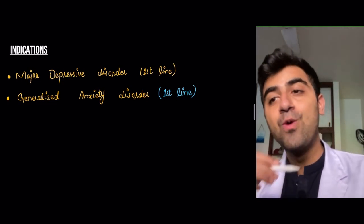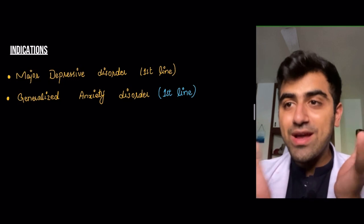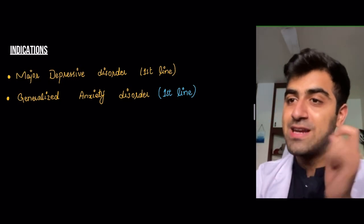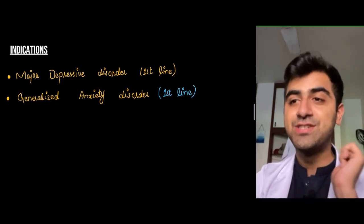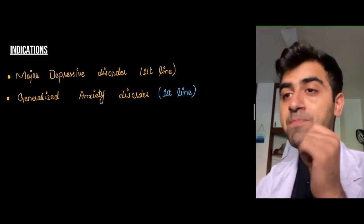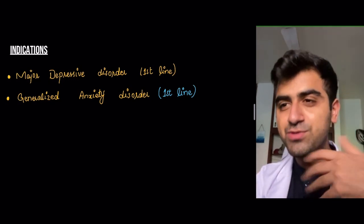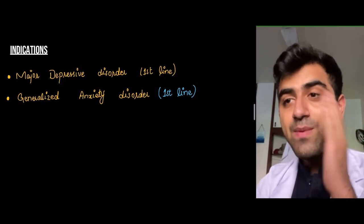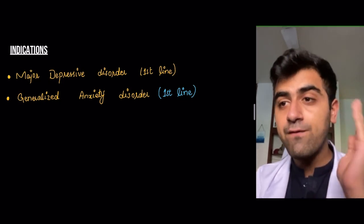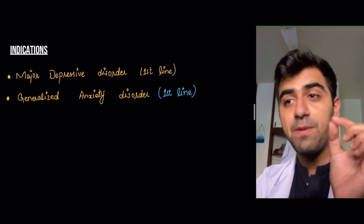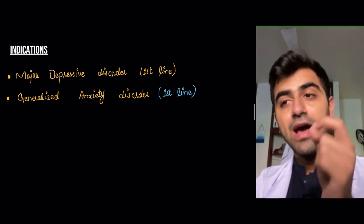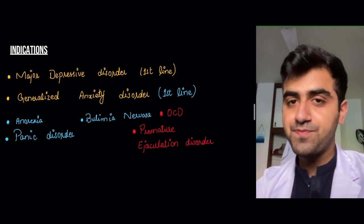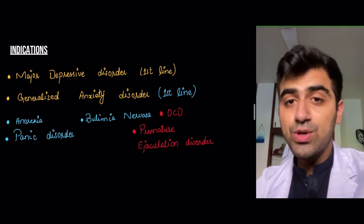For generalized anxiety disorder, the patient might present with a generalized worry about things and an impending sense of doom that something bad might happen. On the exam, you will be asked what the right pharmacological therapy is for these disorders, and the answer is SSRIs.